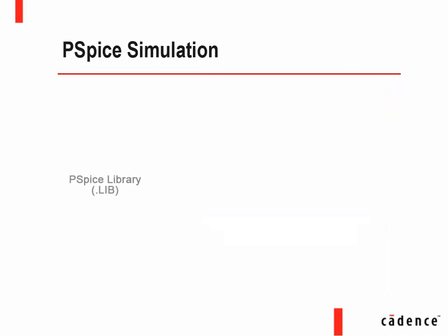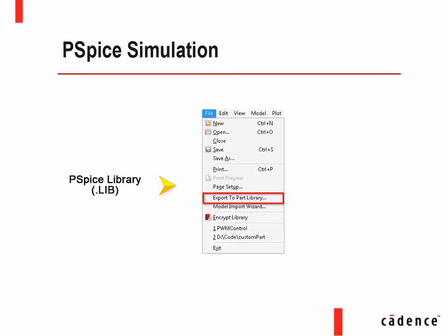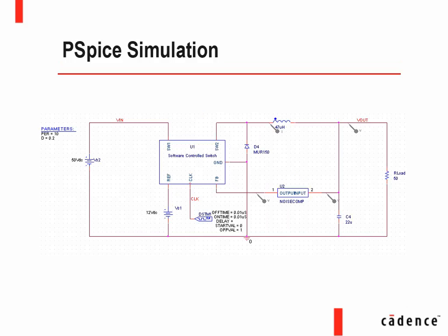After the DLL file is built again with changes, use the export to part library option to create a capture library. Once the capture library is created, add the new part in the capture design.